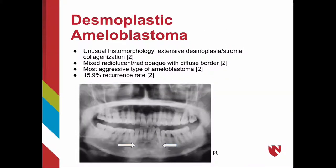The desmoplastic ameloblastoma has an unusual histomorphology with extensive desmoplasia and stromal collagenization. It presents as a mixed radiolucent-radiopaque lesion with diffuse borders. It is the most aggressive type, with a 15.9 percent recurrence rate.